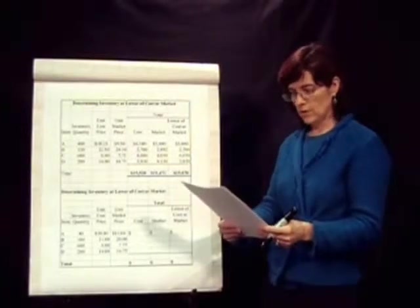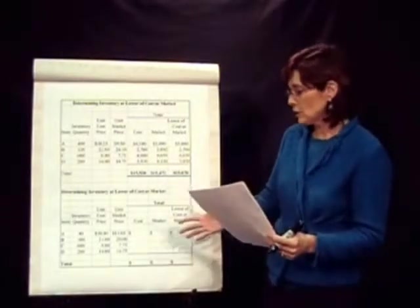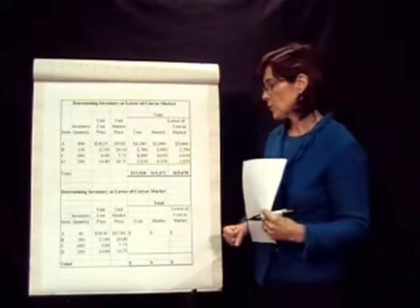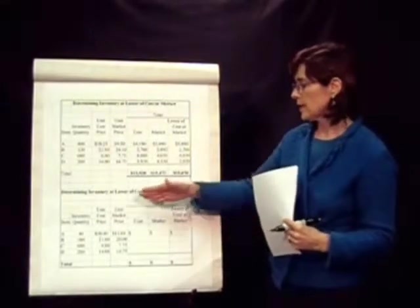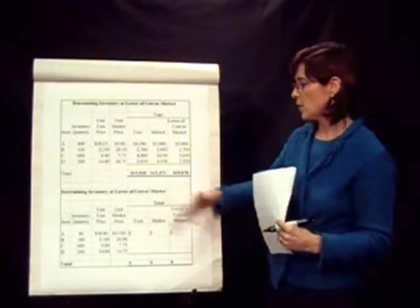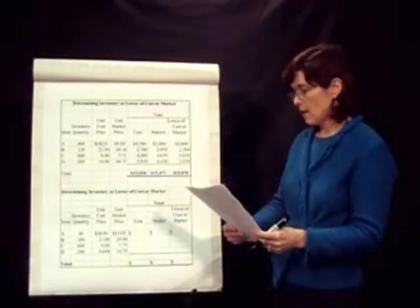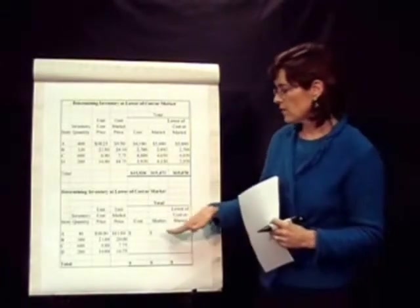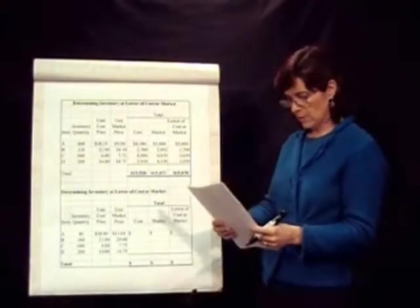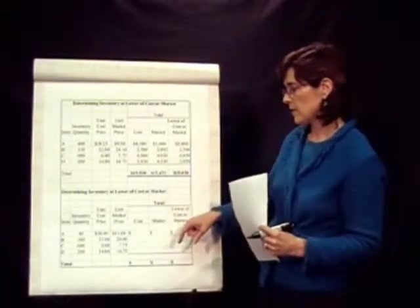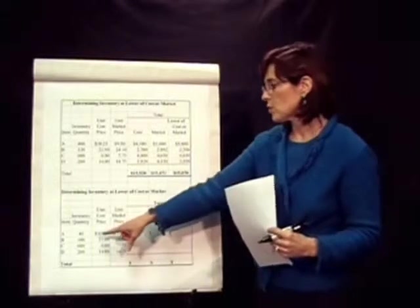And that all has to do with the concept of being conservative with our statements. A lot of the accounting laws were written this way, so we can't keep our inventory at a higher value than what the market value is. And students, it's really very simple. I'll just have a simple example in your handouts, and I also have it up here.